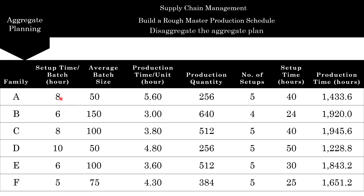And once we disaggregate it, here was the data — we have our rough master production schedule for the disaggregated plan. We have all the data given: the average batch size, the production time per unit, production quantity, which is the number of setups, the setup time in hours, and the production time in hours.